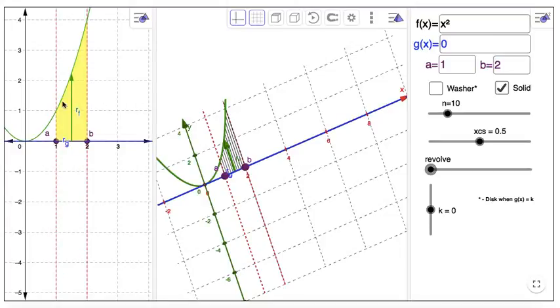So this example here is the y equals x squared graph. It's being integrated from 1 to 2, and this area is going to be rotated around the x-axis.